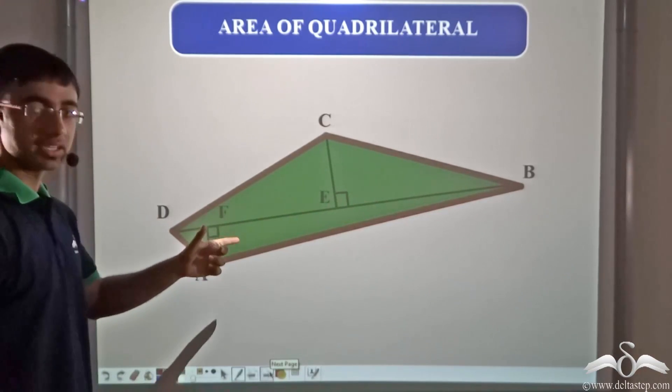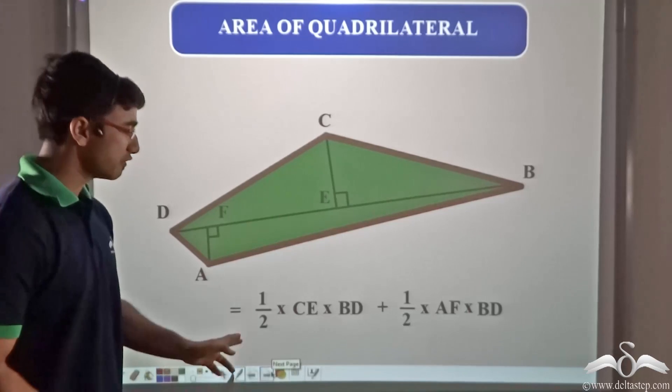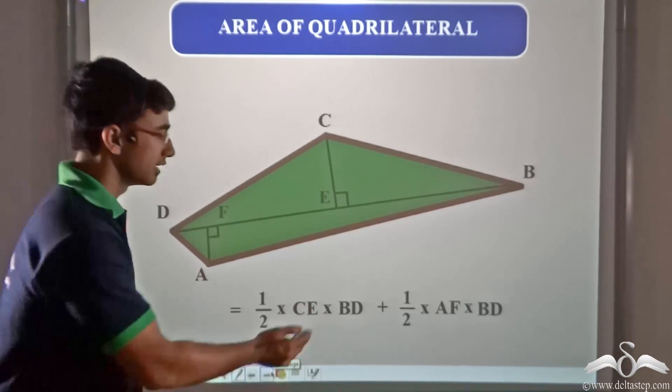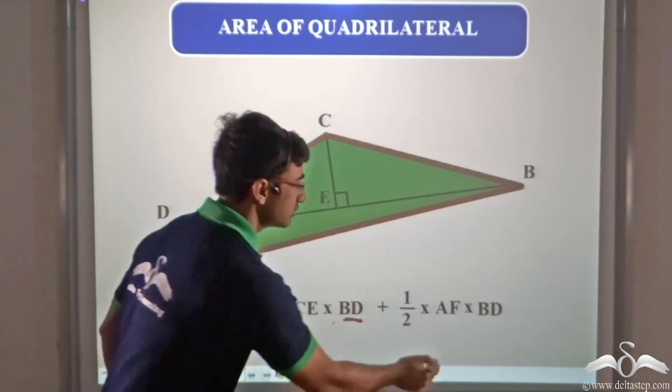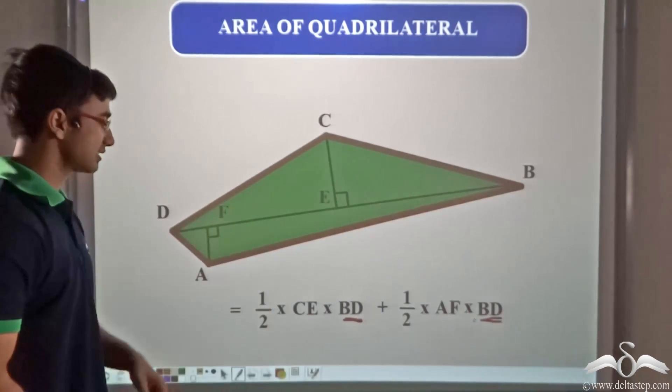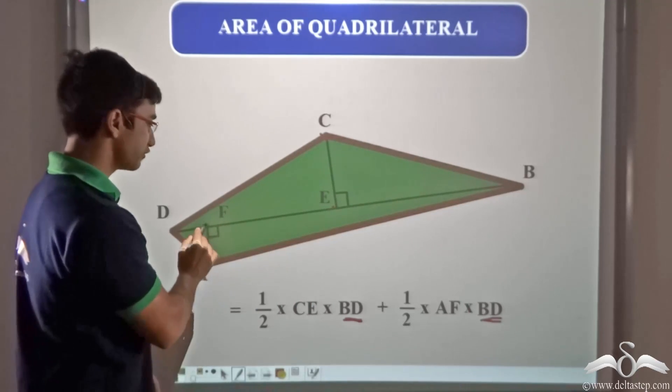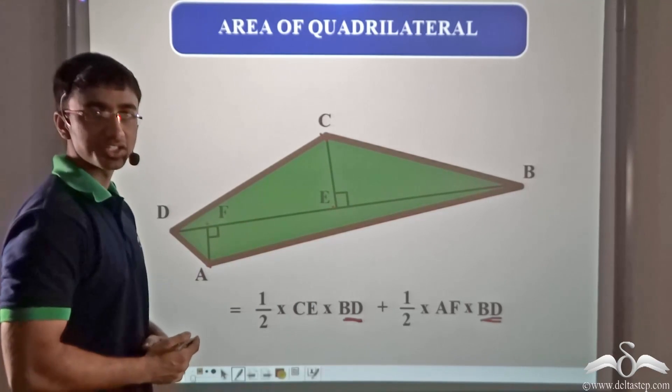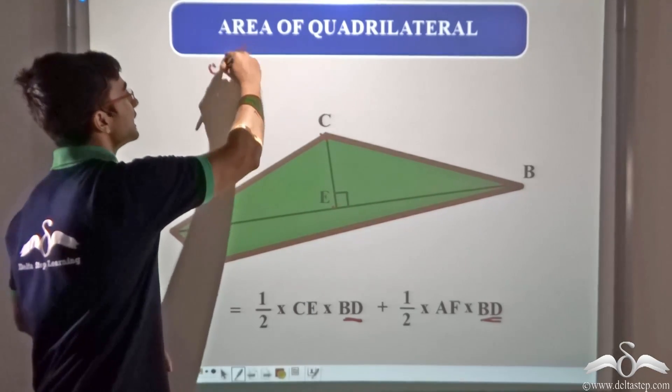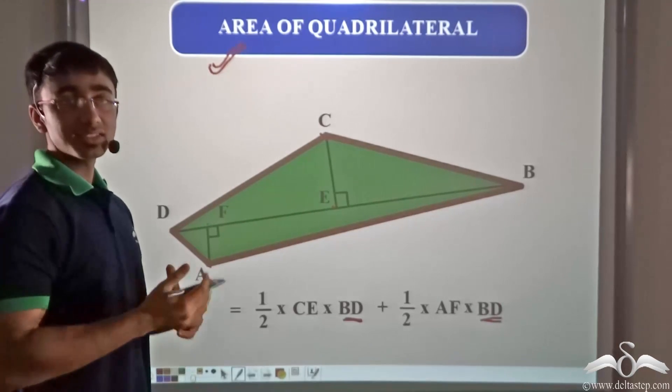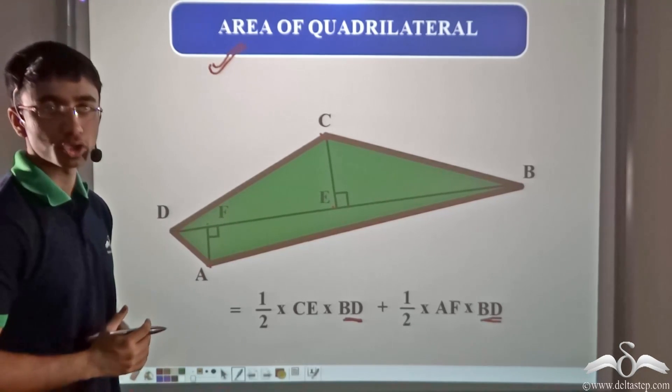This will give us the area of this particular quadrilateral as half into CE into BD plus half into AF into BD. Here BD is the base, CE is the height of this triangle, and AF is the height of this particular triangle. So adding up these two areas, we will be able to get the area of the quadrilateral, and thus Suresh will be able to know how much net he needs for his plot of land.